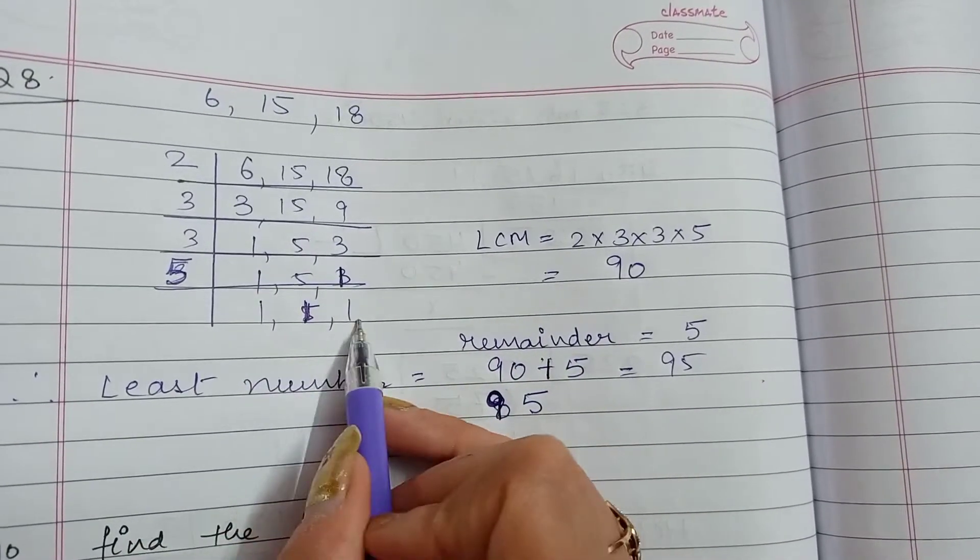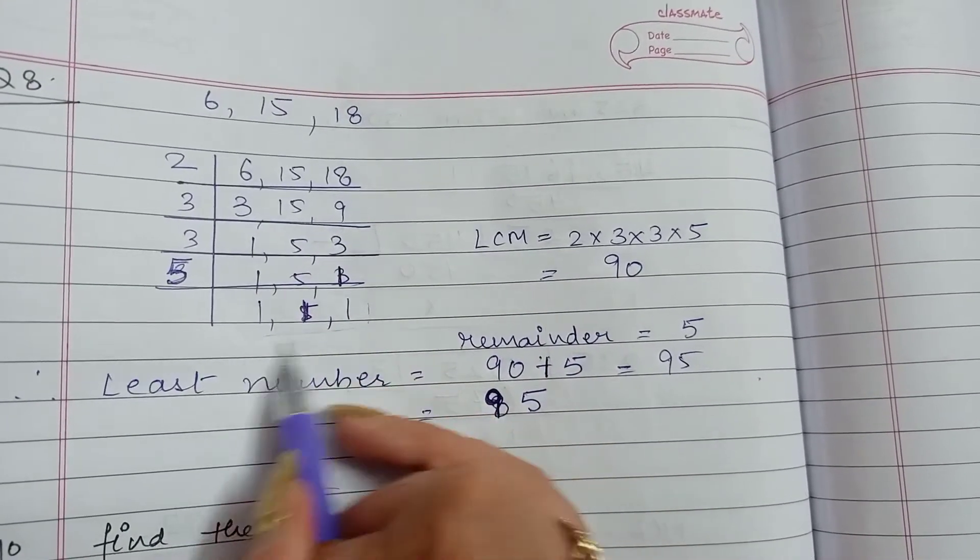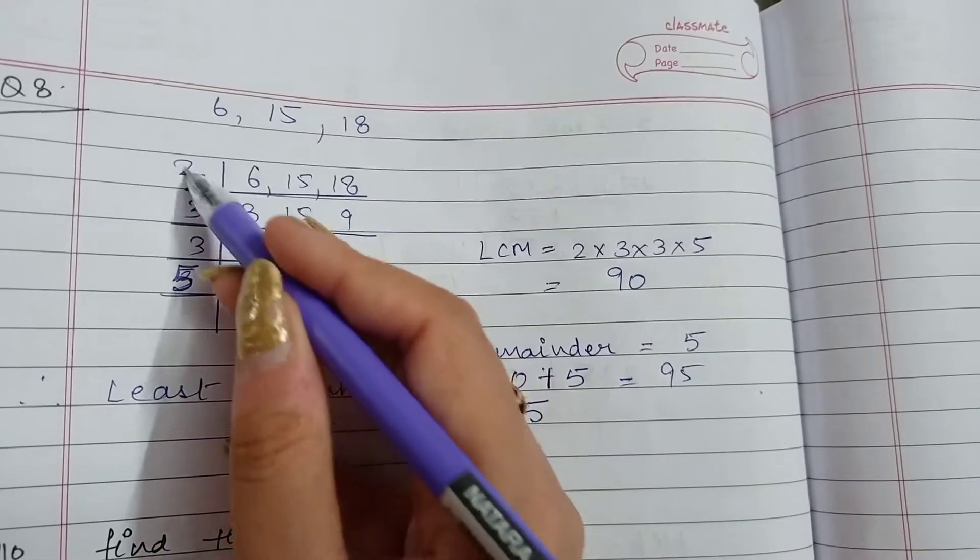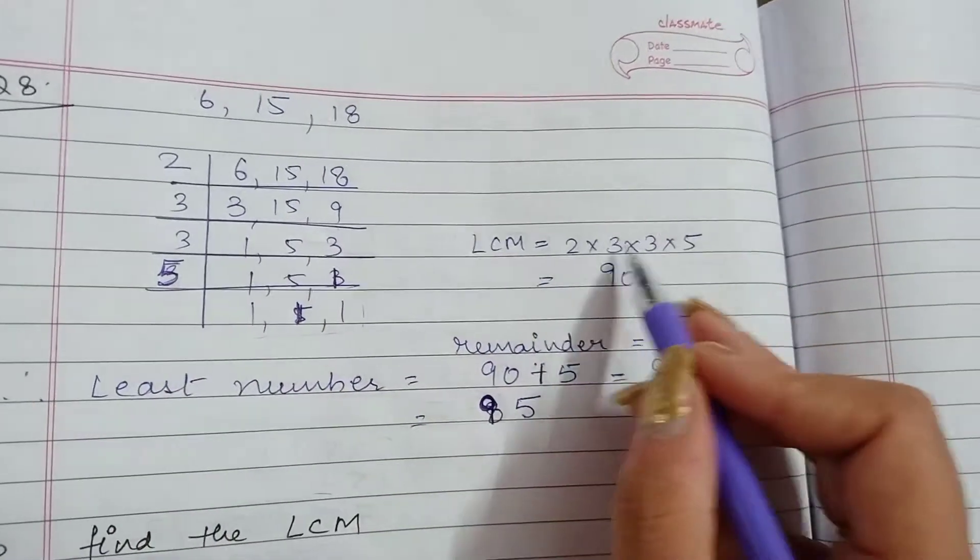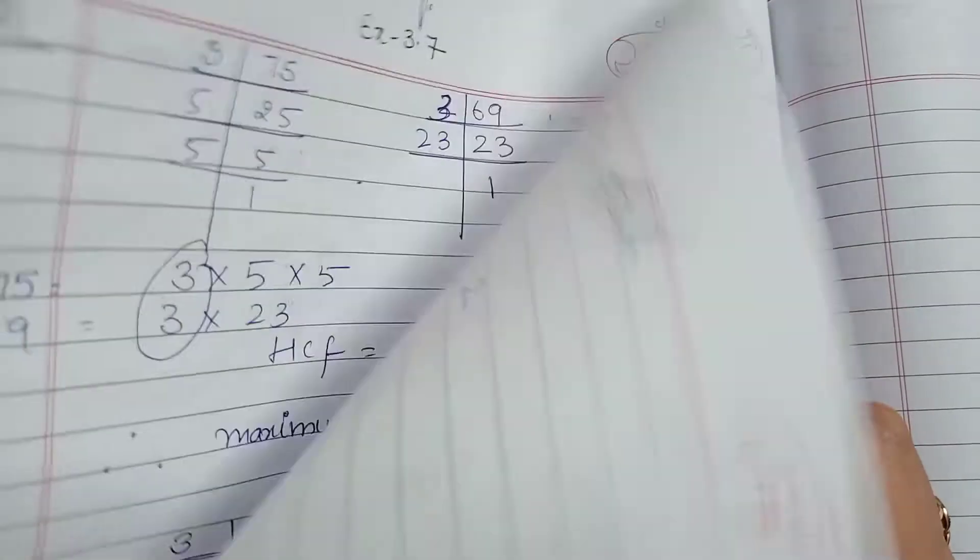Now 5 is left. 5, 1's are 5. We have attained 1 here. Now these are the common multiples. We will arrange them, multiply and find the LCM.